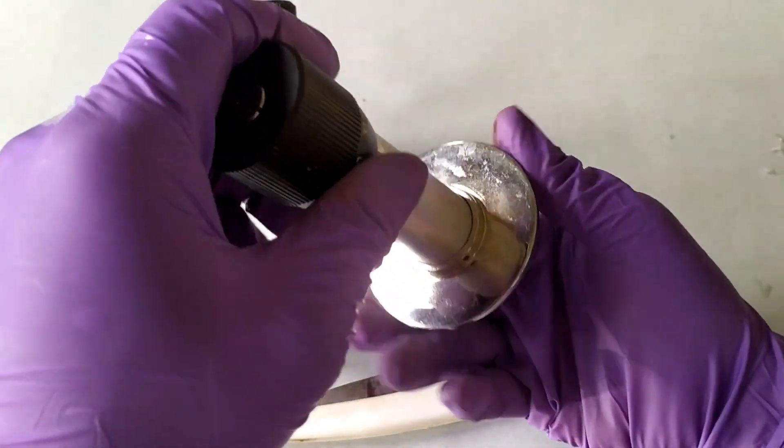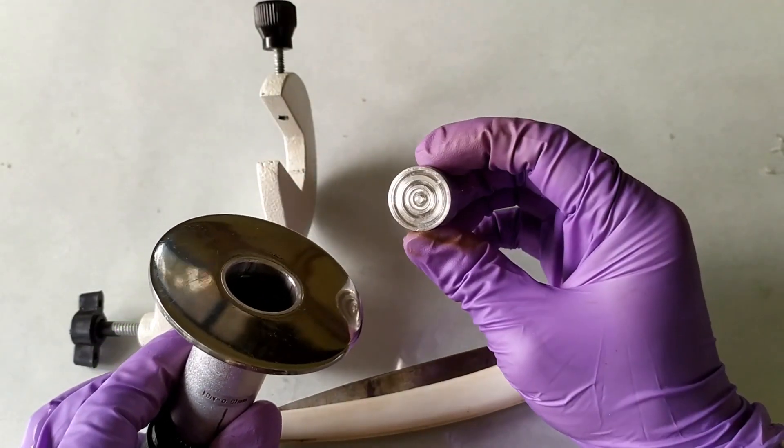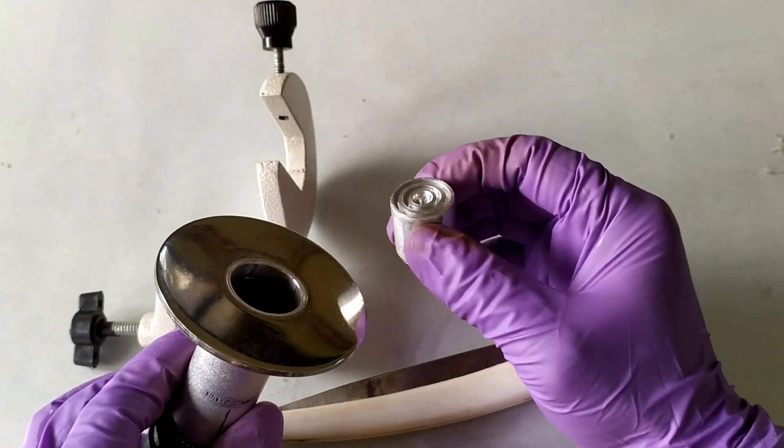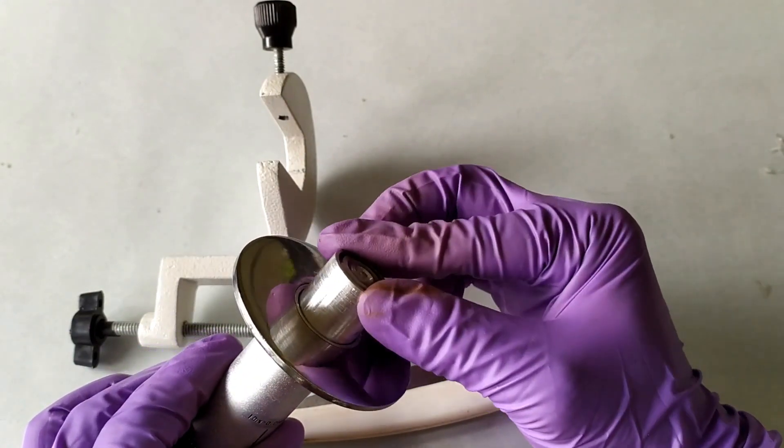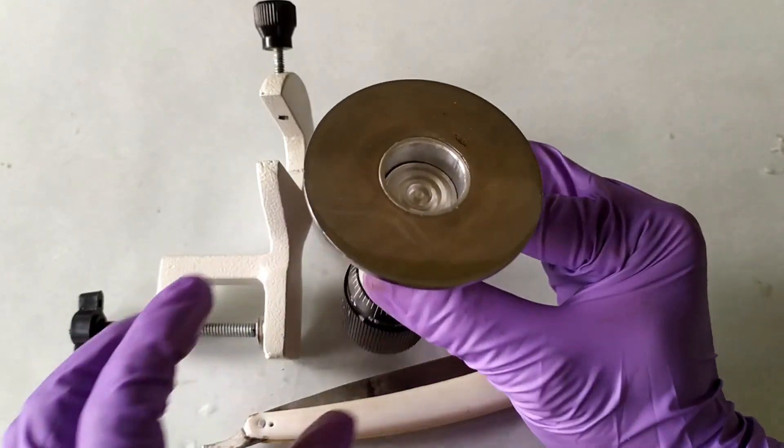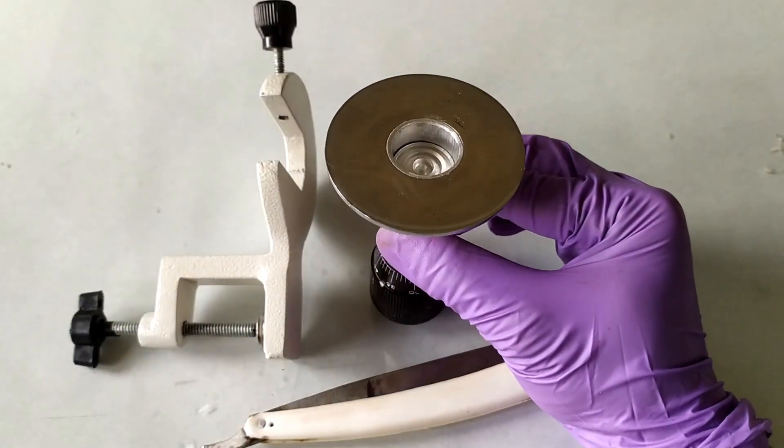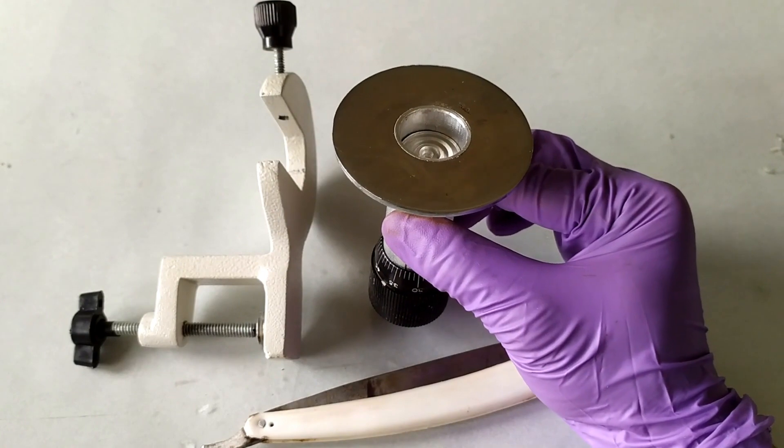One point to be noted here is that the hand microtome is designed primarily to cut sections that have been embedded in a pith material such as carrot, potato or even a paraffin wax block. The material is supposed to fit tightly in the sample holding groove for efficient sectioning.